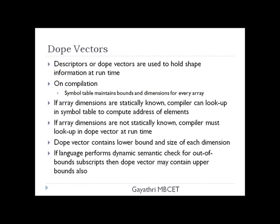Descriptors or dope vectors are used to hold shape information at runtime. During compilation, the symbol table maintains the bounds and dimensions for every array. If array dimensions are statically known, the compiler can look up the symbol table to compute the address of elements. If not, the compiler uses the dope vector at runtime to check dimensions. The dope vector holds the lower bound and size of each dimension, and may optionally hold the upper bound for index-out-of-bounds checks.